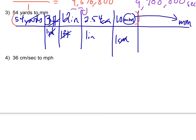I multiply everything on top and divide by everything multiplied on the bottom. My final answer is 49,377.6. I was given 2 sig figs at the beginning, so I round to 2 sig figs. My final answer is 49,000 millimeters.